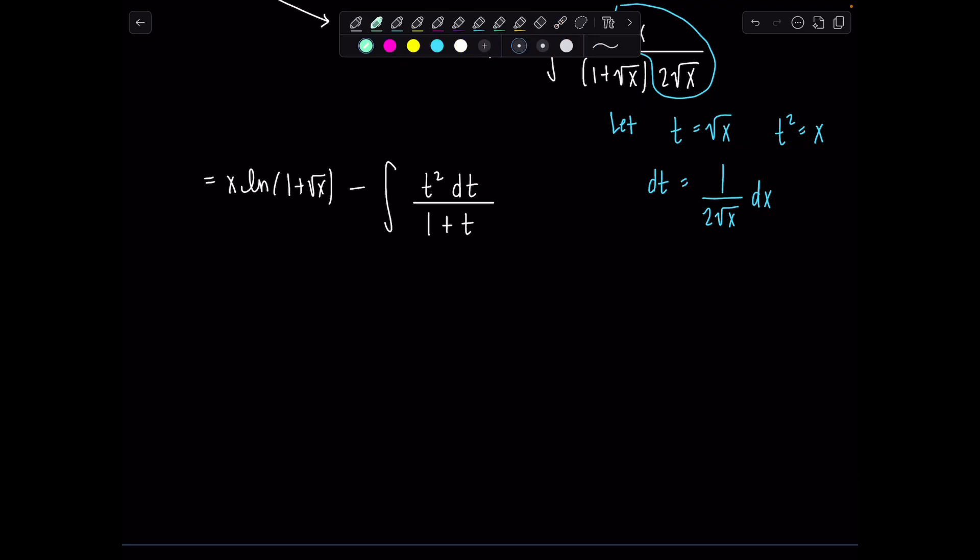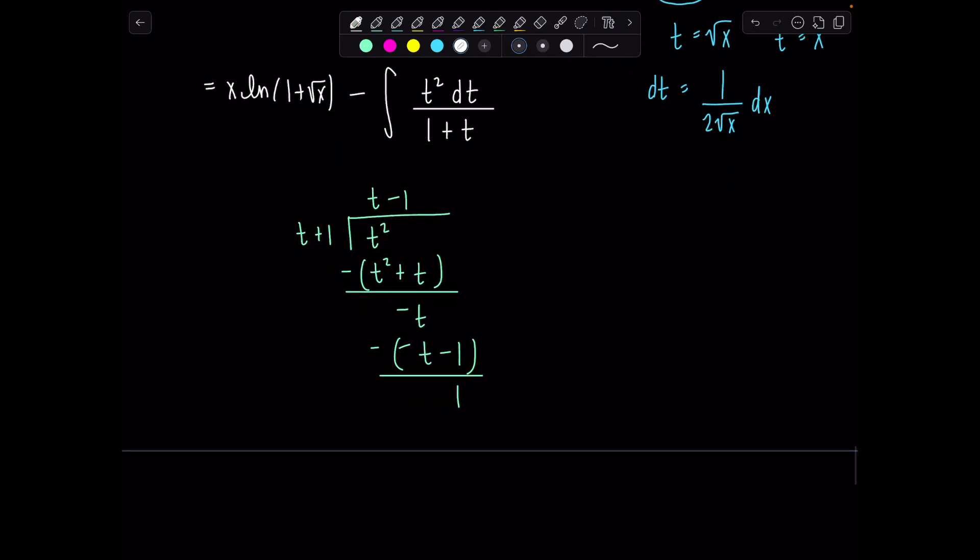Oh yes, so we'll take t plus 1 and then divide it into t squared. So multiply by t, that'll be t squared plus t. Subtract that from the row above. We have negative t. That'll go in minus 1 times. So then this is negative t minus 1. Subtract that and then now we have a remainder of positive 1.